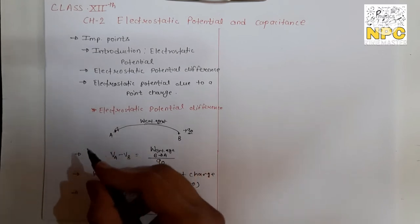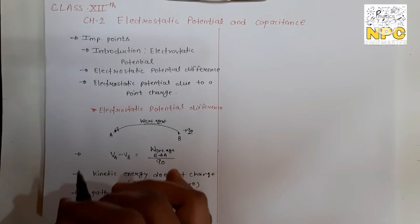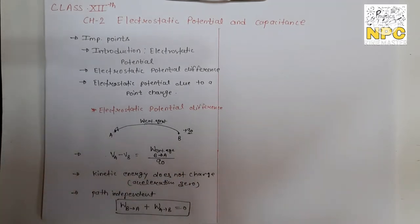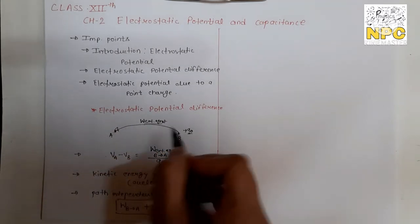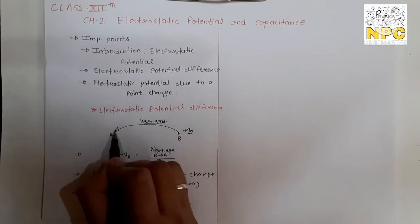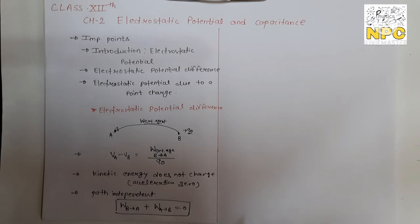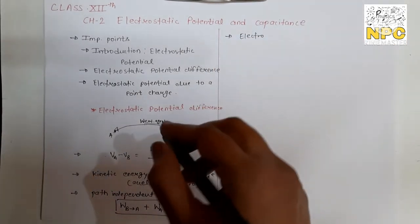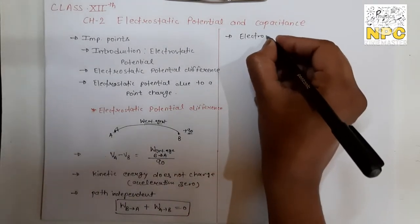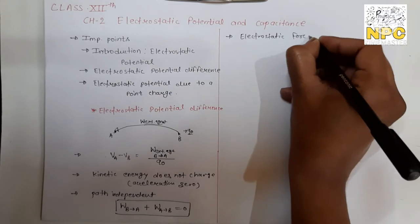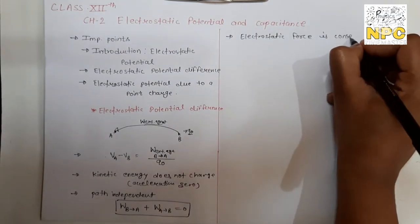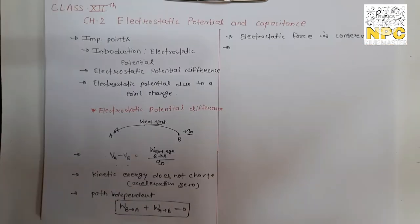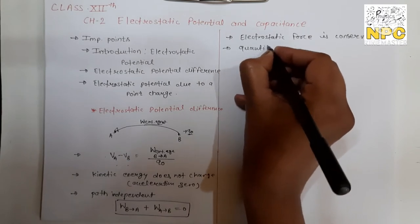The total work done for a round trip — going from B to A and back from A to B — is zero. This means if you go from B to A and come back from A to B, total work done is zero. This tells us that the force doing work here is conservative. The electrostatic force is conservative, which means it is path independent.